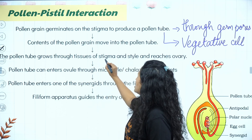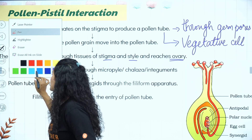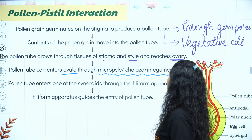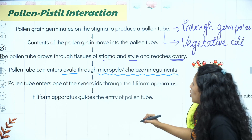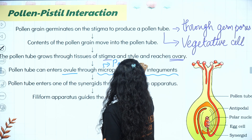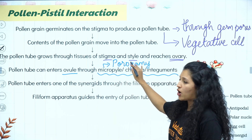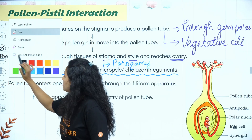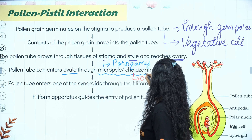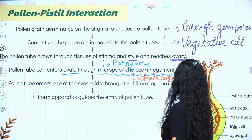The pollen tube grows through the tissues of the stigma and style, and reaches the ovary. The pollen tube then enters the ovule through the micropyle, chalaza, or integuments. Entry through the micropyle is called porogamy. Entry through the chalaza is called chalazogamy. Entry through the integuments is mesogamy — these are extra points but important for exam questions.